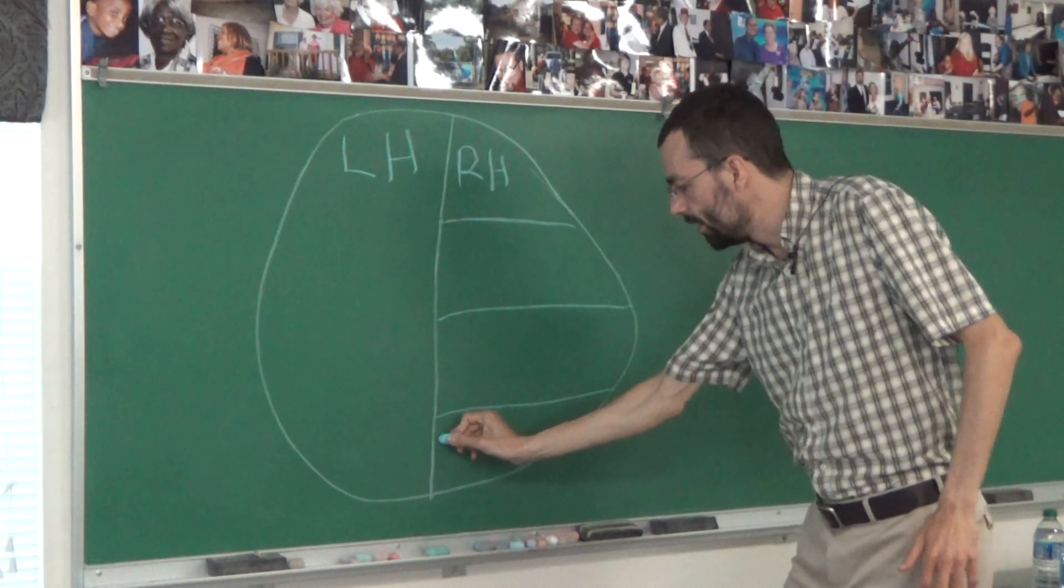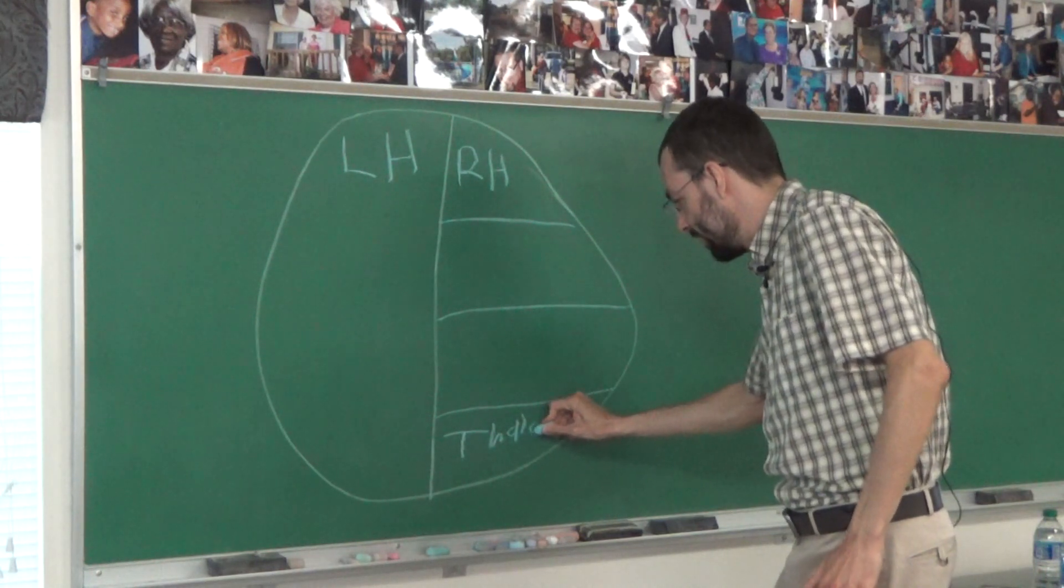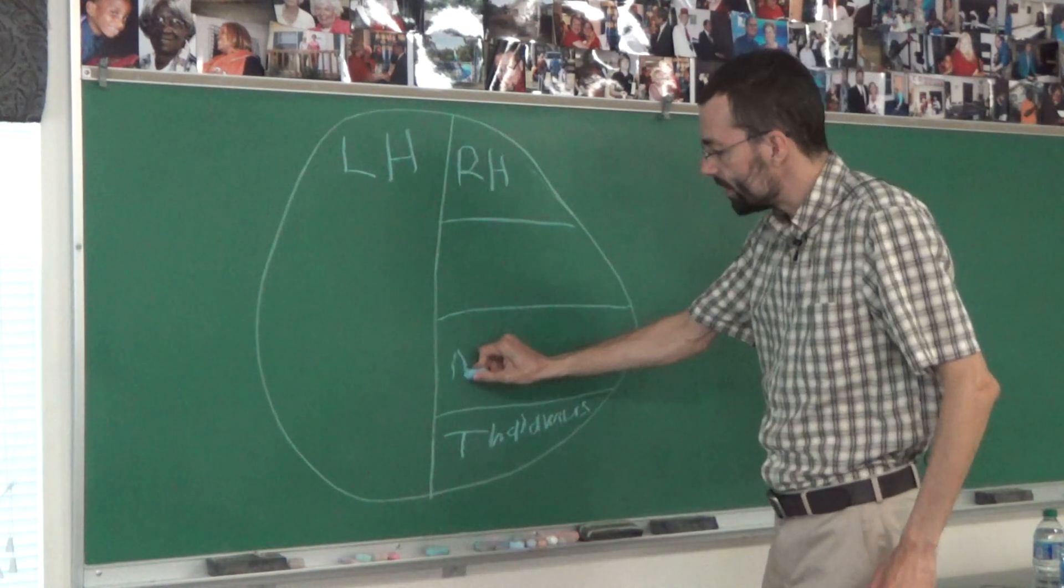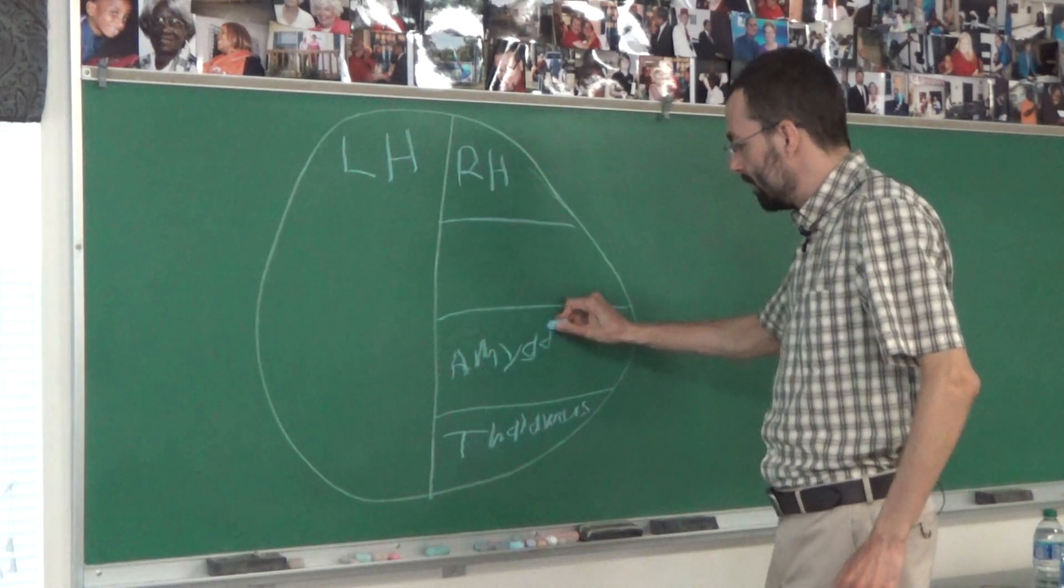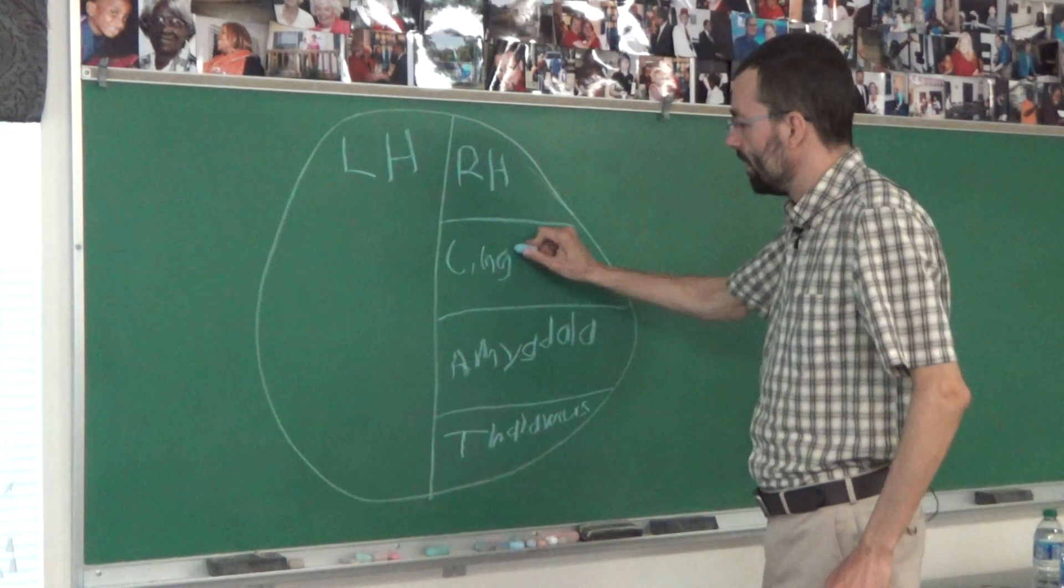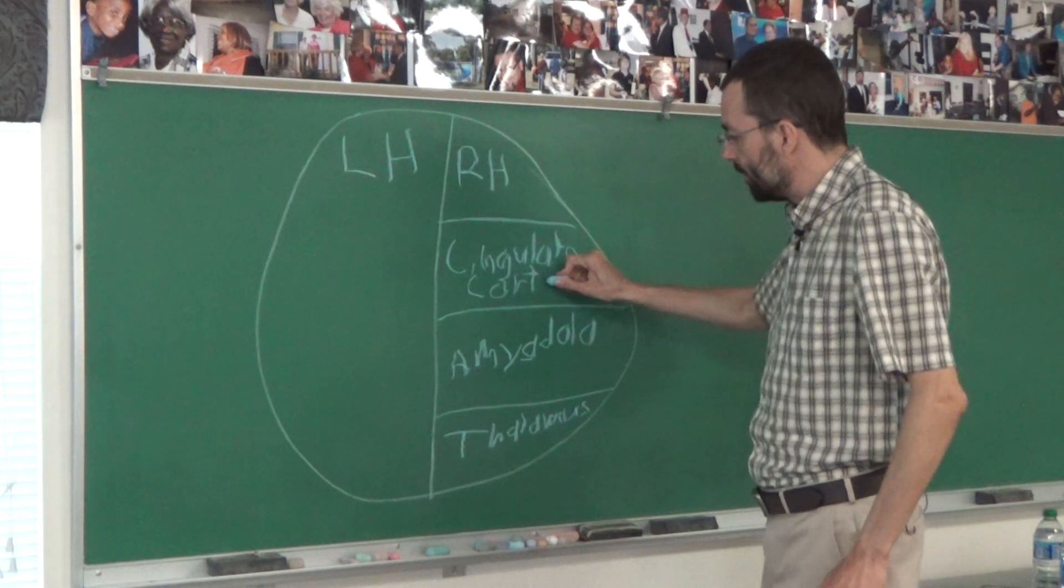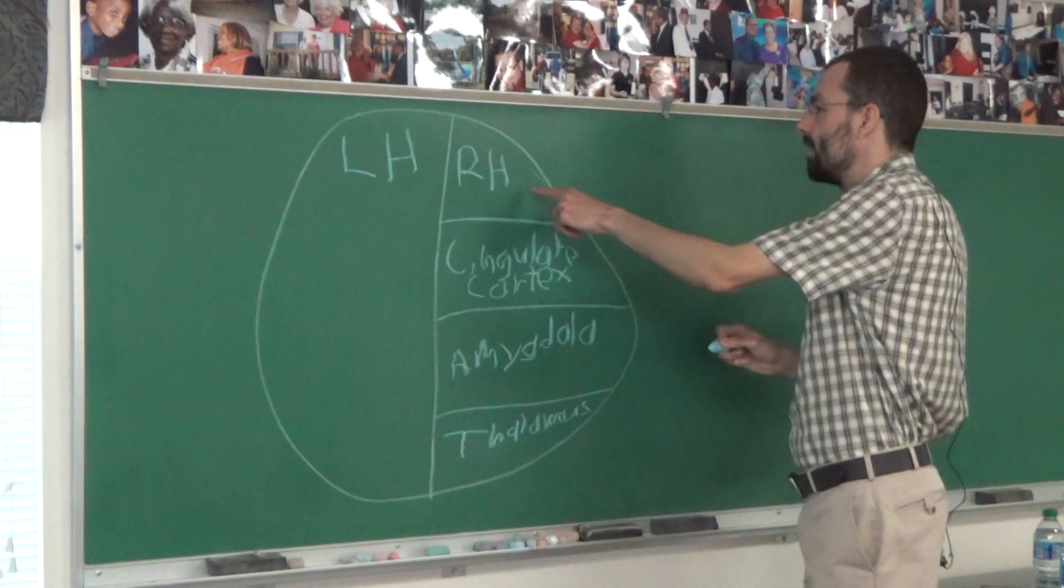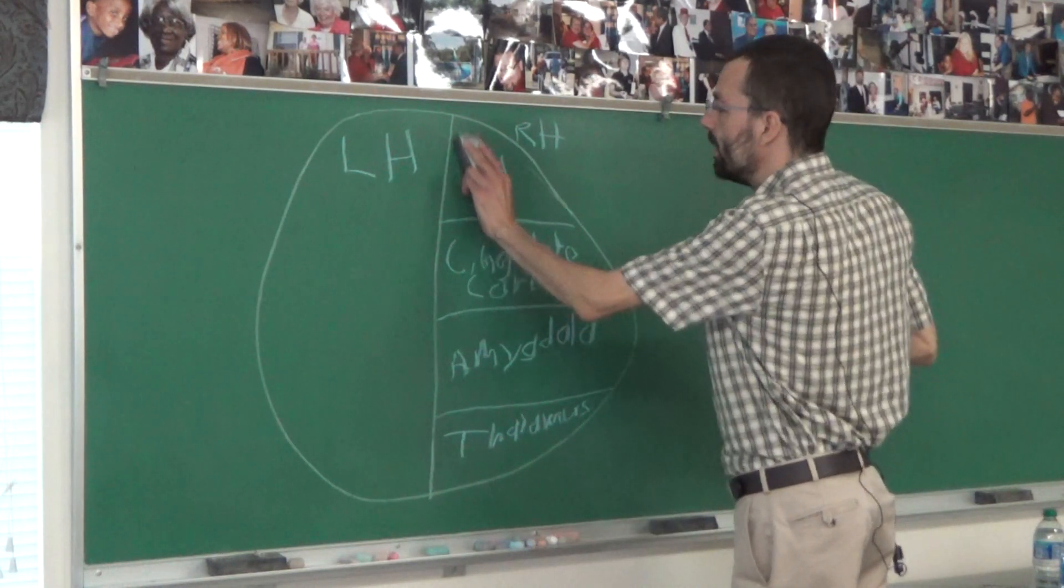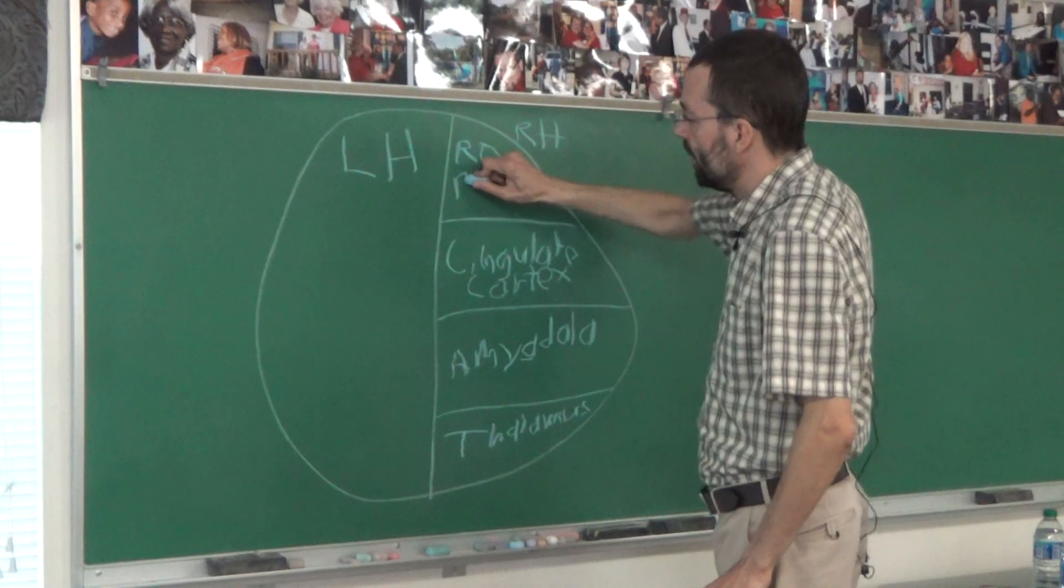The right hemisphere is divided into four levels. Level one is the thalamus. This is the amygdala. This is the cingulate cortex. And this is the right orbital prefrontal cortex. I'm going to put RH up here. This is the whole right brain. I'll give this an acronym: R-O-P-C.